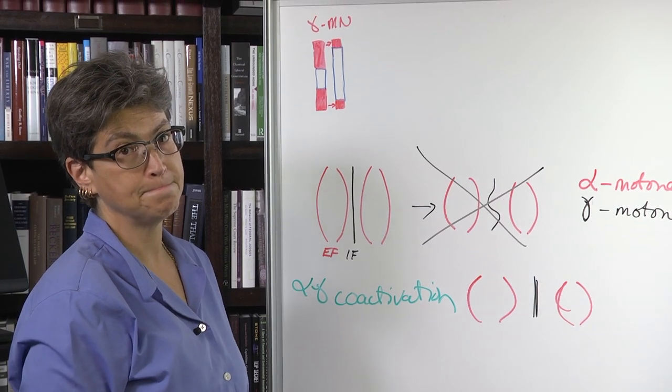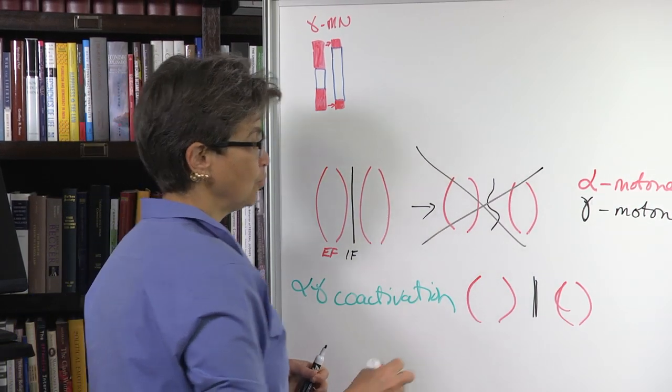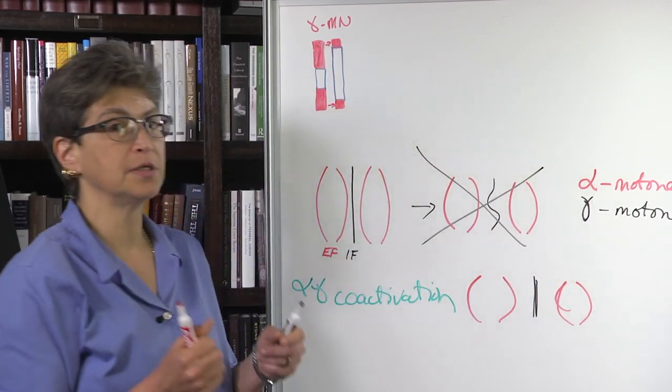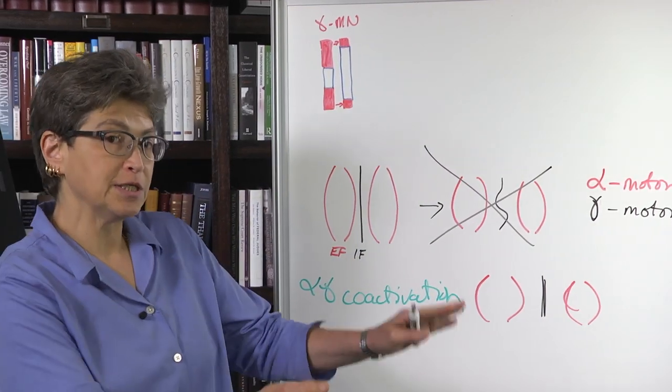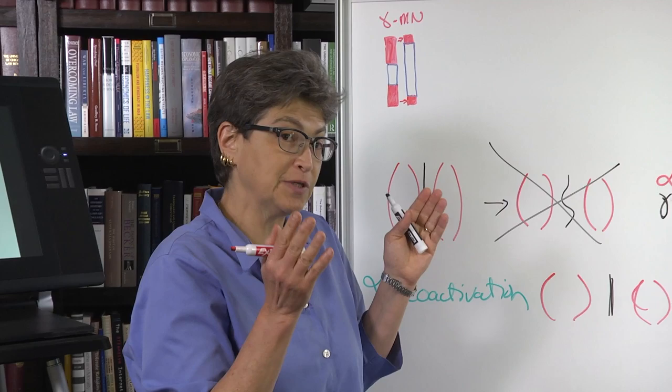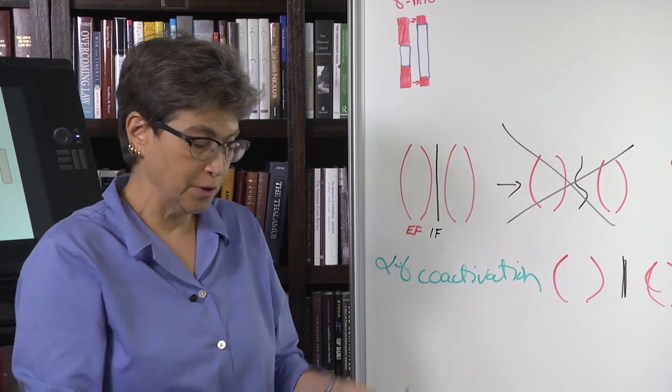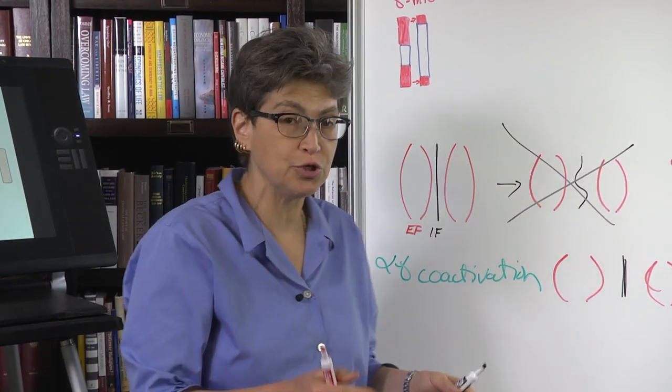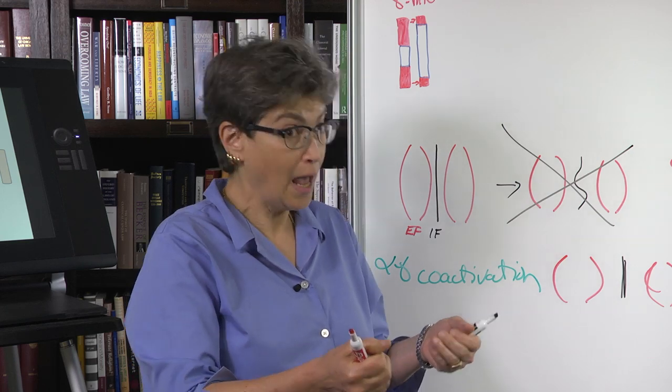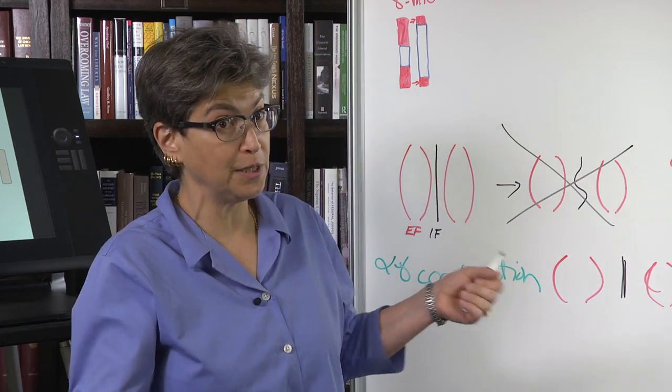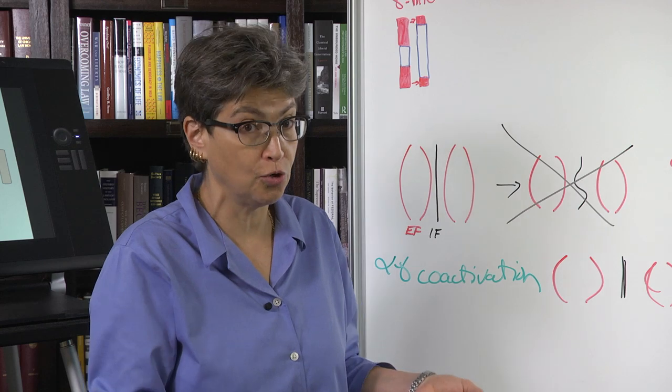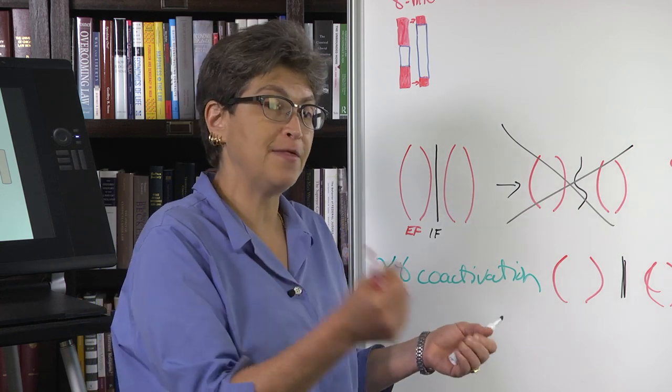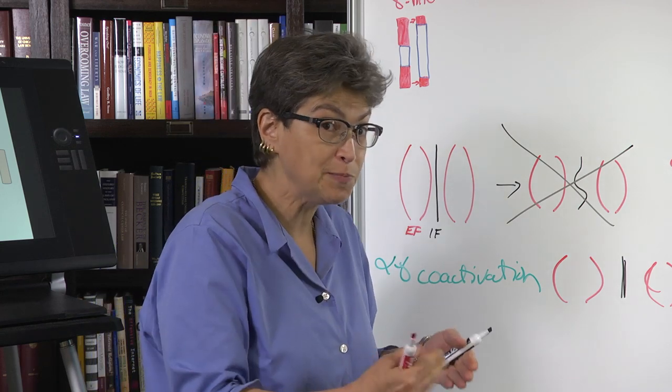If the red regions are contracted because of gamma motor neuron activation, then this equatorial region will be stretched. Okay? So they will be contracted. So that at all times, information is given, the same information is given to alpha motor neurons and gamma motor neurons. And what that does is it enables your feedback system, how much is my muscle being stretched by an external load, it enables that system to always be online.